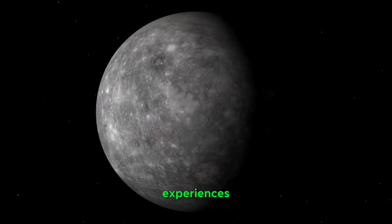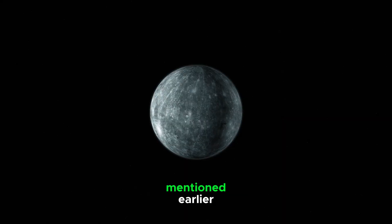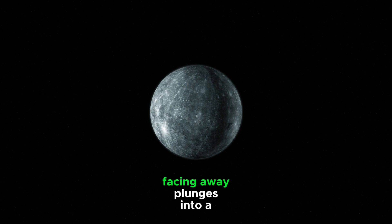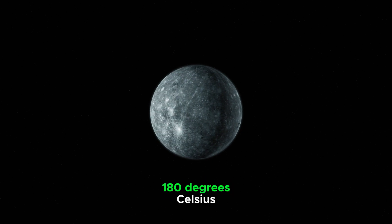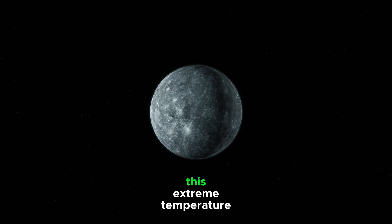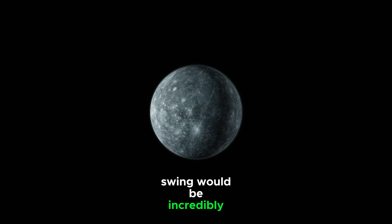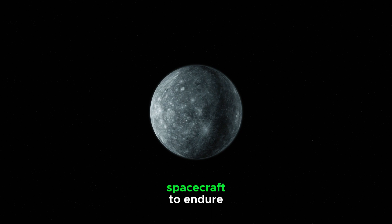The side facing the sun experiences the scorching temperatures mentioned earlier, while the side facing away plunges into a frigid darkness, reaching temperatures of minus 180 degrees Celsius. This extreme temperature swing would be incredibly difficult for humans or any spacecraft to endure.